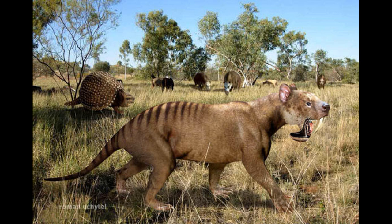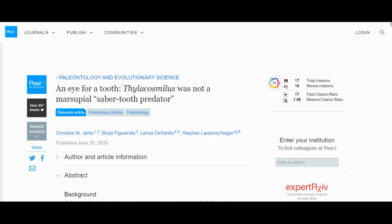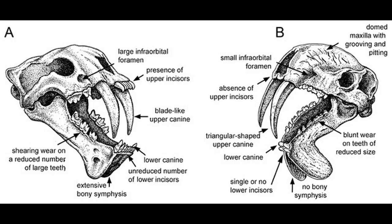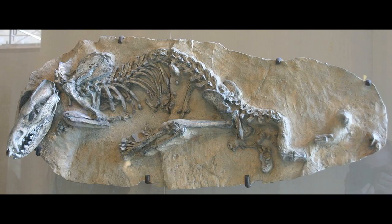Although Thylacosmilus has often been likened as highly convergent with saber-toothed cats, there are some very notable differences. In a paper from 2020, Janus et al. argued that Thylacosmilus couldn't have occupied an ecological niche similar to cats. Instead, it was predominantly a scavenger and specialized in feeding on internal organs. Why the Sparacidonts went extinct is currently unknown. Researchers previously thought that competition with placental mammals following the formation of the Panamanian Isthmus drove them to extinction. However, almost all Sparacidonts were already extinct by the time the Great Biotic Interchange started.